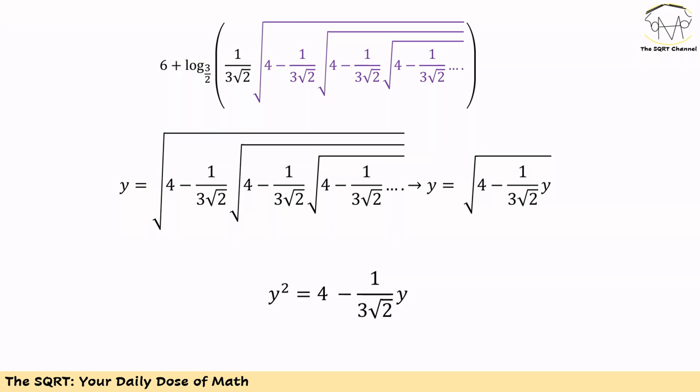We can write Y equals the radical of 4 minus 1 over 3 square root of 2 times Y. Now, if we get power of 2 from both sides of the equation, we are going to end up with Y to the power of 2 equals 4 minus Y over 3 times square root of 2.